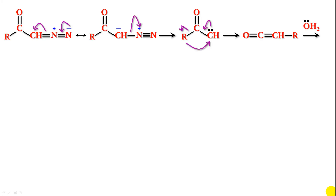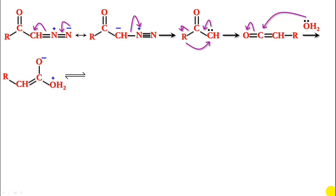The ketene undergoes hydrolysis: water attacks the carbonyl carbon, the pi bond shifts to O, and you get an intermediate where one oxygen has a negative charge and the OH₂ attached has a positive charge. There is an intramolecular proton exchange, and you get a geminal diol with a double bond on the carbon — this carbon has two C-OH groups.